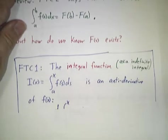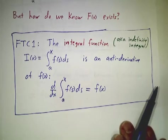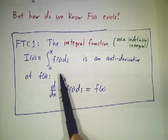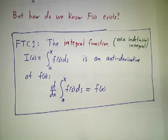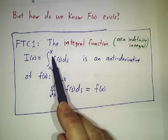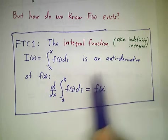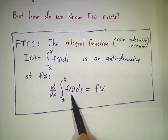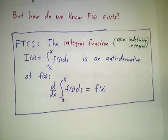Fortunately, we have the first fundamental theorem of calculus. The first fundamental theorem of calculus says that as long as f is a reasonable function and continuous functions are reasonable, then the integral function, which is the running total, this is sometimes called the indefinite integral, is an antiderivative. So the derivative of the running total is the value of the function. Okay? Nice result.